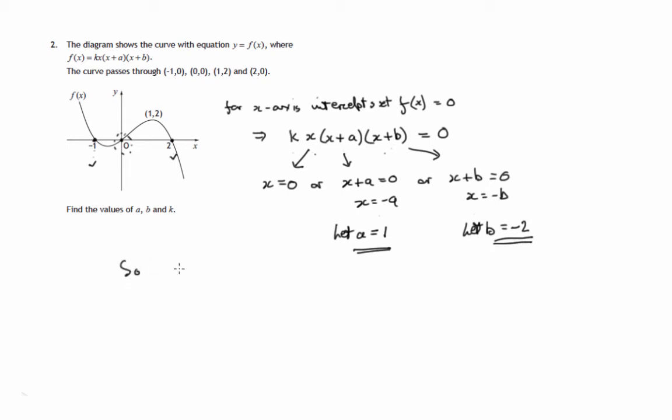So what have we got so far? We've got the fact that this function is some unknown factor k times x times x plus 1 times x minus 2.